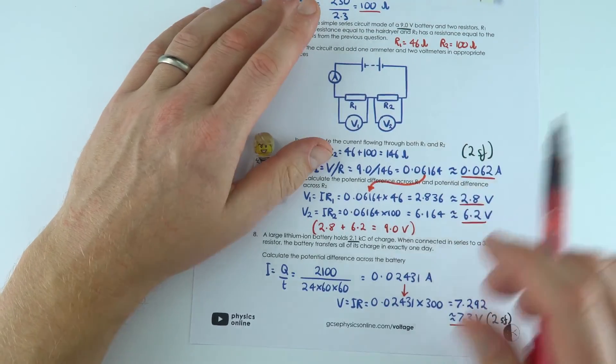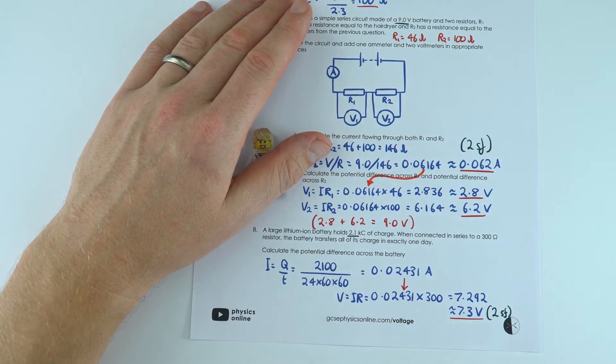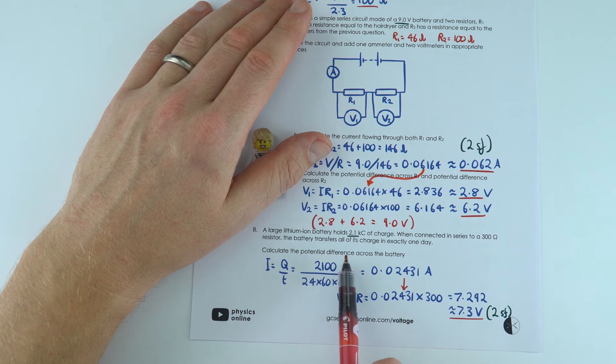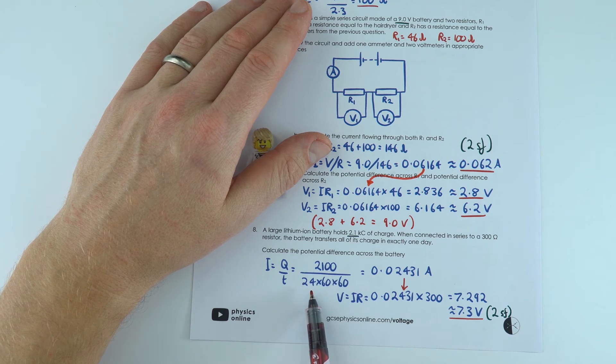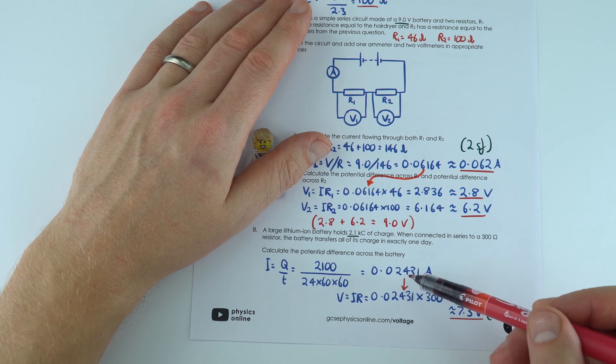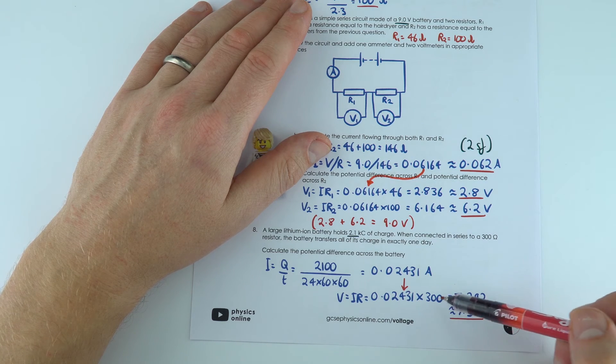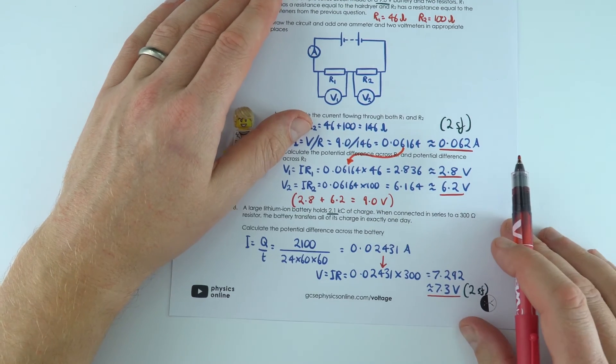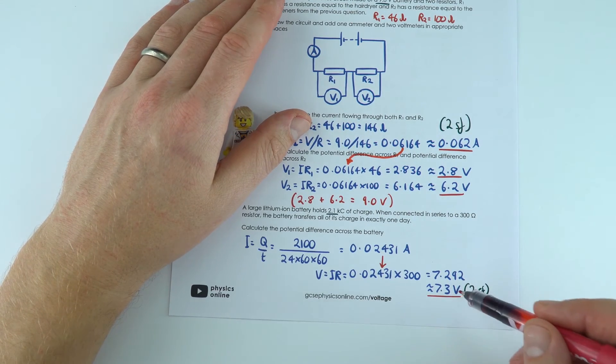And then for the final one, again I just showed this equation here, not forgetting of course that in one day we're going to have 24 hours times 60 minutes times 60 seconds, and then we use this value for the current multiplied by the resistance to find the value to two significant figures was 7.3 volts.